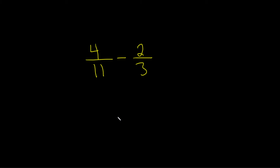In this problem, we're going to subtract these fractions. In order to subtract these fractions, we first have to find a common denominator. To find the common denominator, all we do is multiply the 3 and the 11. So 3 times 11 is equal to 33.